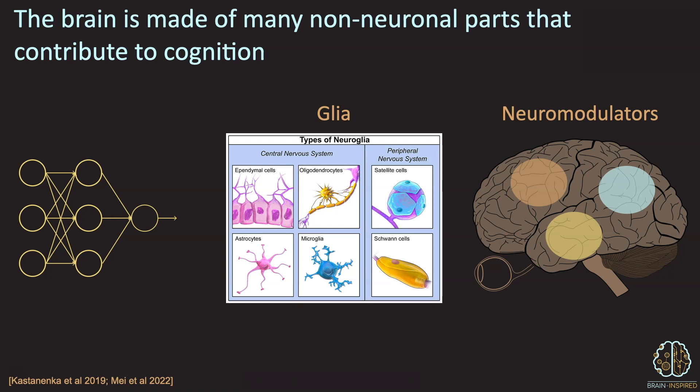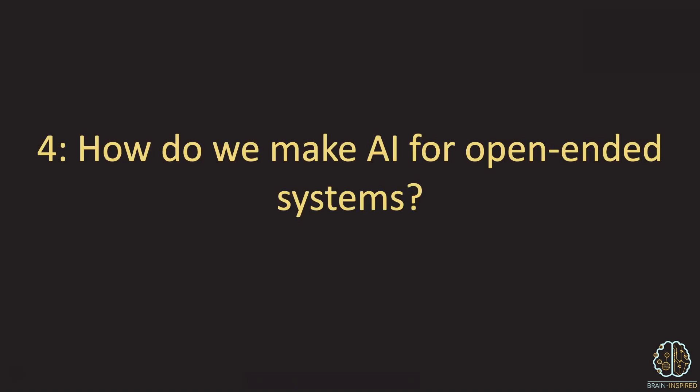So that's question three. What's the right mix of higher-level, abstract, symbol-based kinds of AI and finer-grained details we know that brains use? So the last two questions are in some sense more fundamental, and less people in AI are thinking and working on them. Question four is, how do we make AI for open-ended systems?